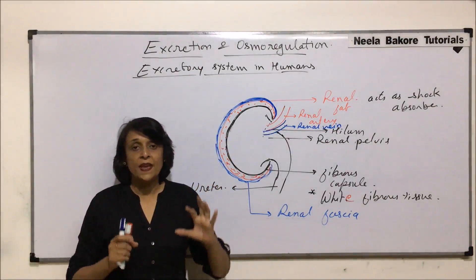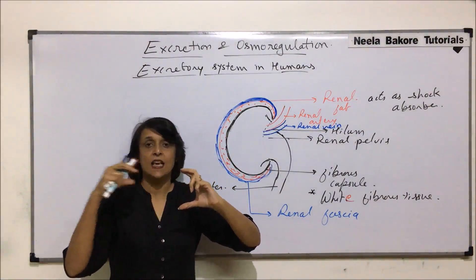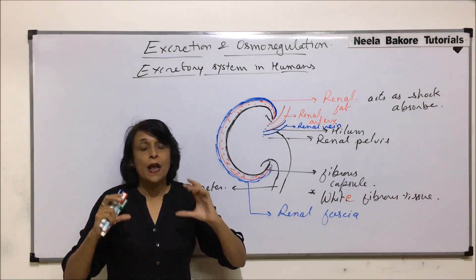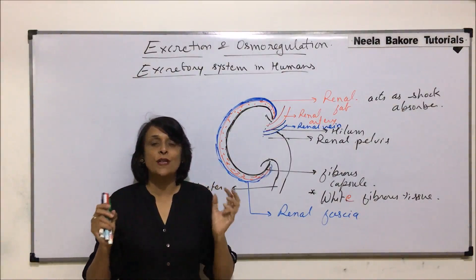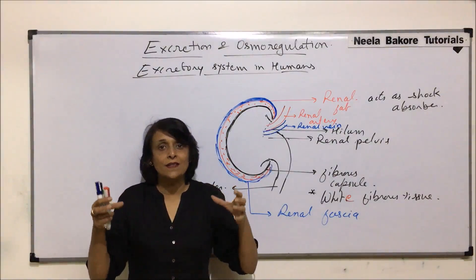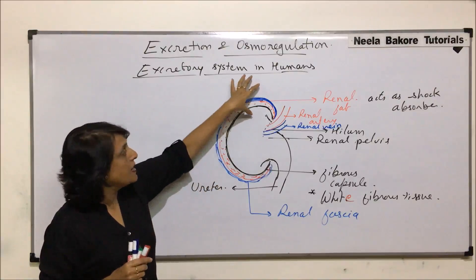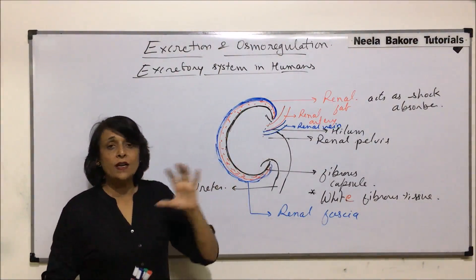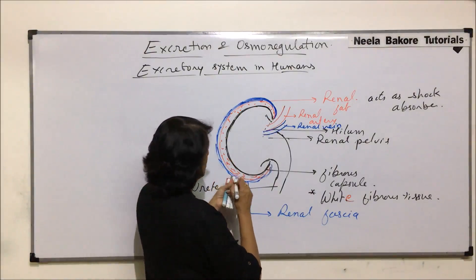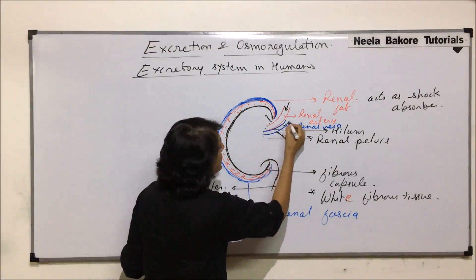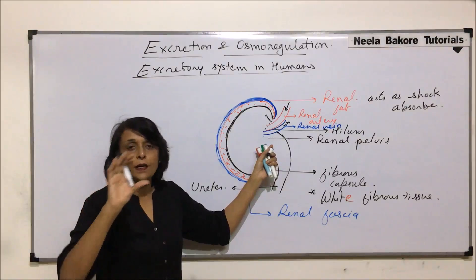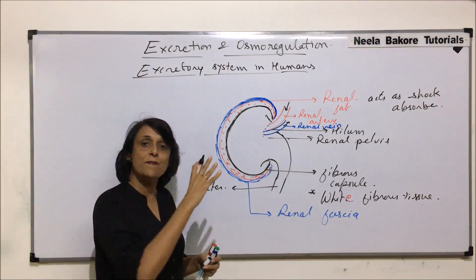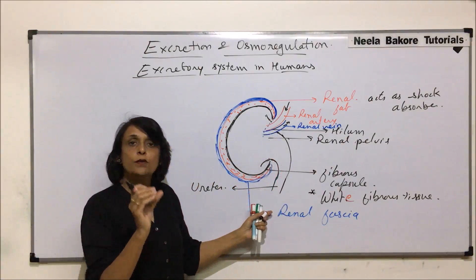The left kidney is slightly higher — along the 12th thoracic, 1st, 2nd, and 3rd lumbar — and the right one is slightly lower. The upper part of both kidneys is protected by the last two ribs: the 11th and 12th ribs. Above the kidney there is also a gland known as the suprarenal or adrenal gland. The renal artery takes blood in, the renal vein takes blood out, and a tube-like ureter emerges from the hilum.